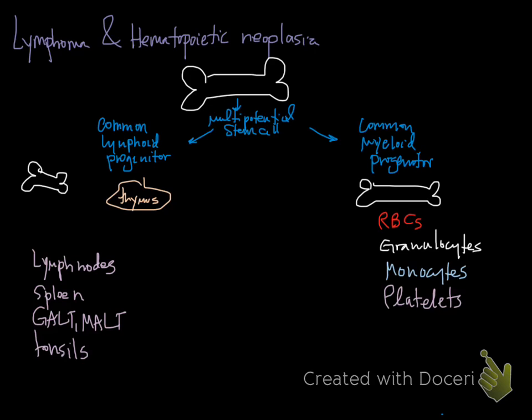A common myeloid progenitor remains in the marrow and then produces the various subtypes: erythroid cells through erythropoiesis, granulocytes through granulopoiesis — so neutrophils, basophils, eosinophils — as well as monocytes and platelets.